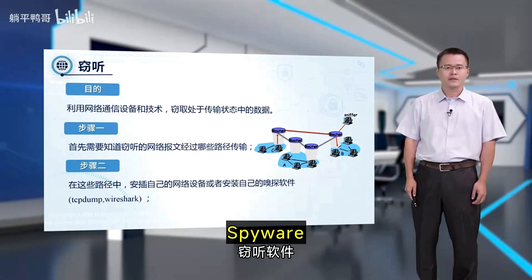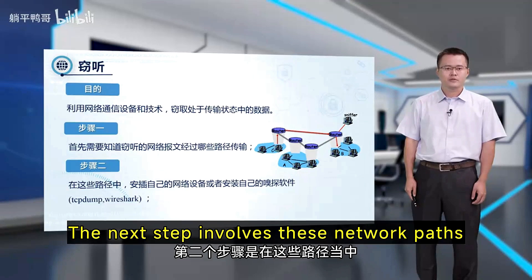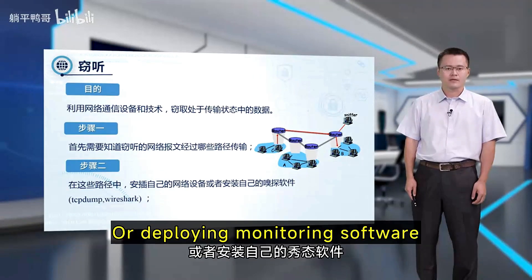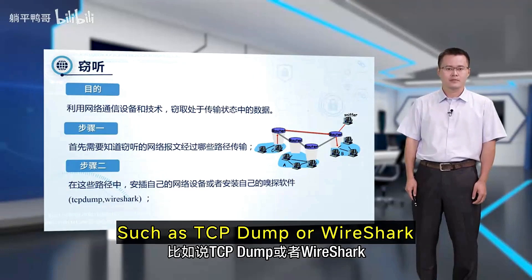The next step involves these network paths: installing custom network devices or deploying monitoring software such as TCP dump or Wireshark.